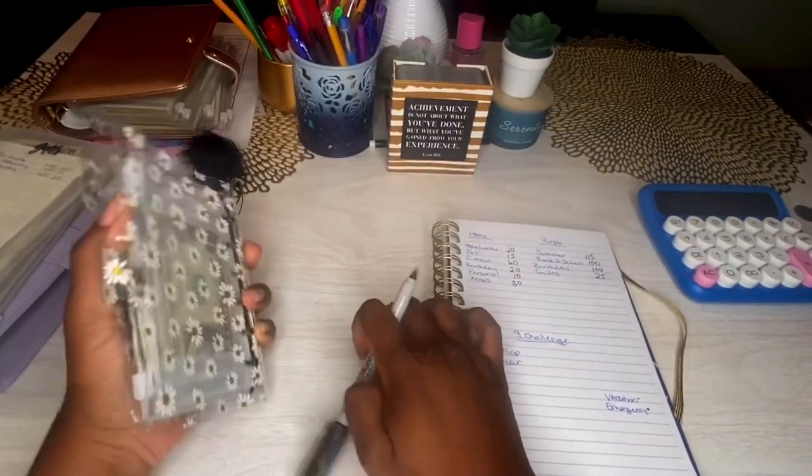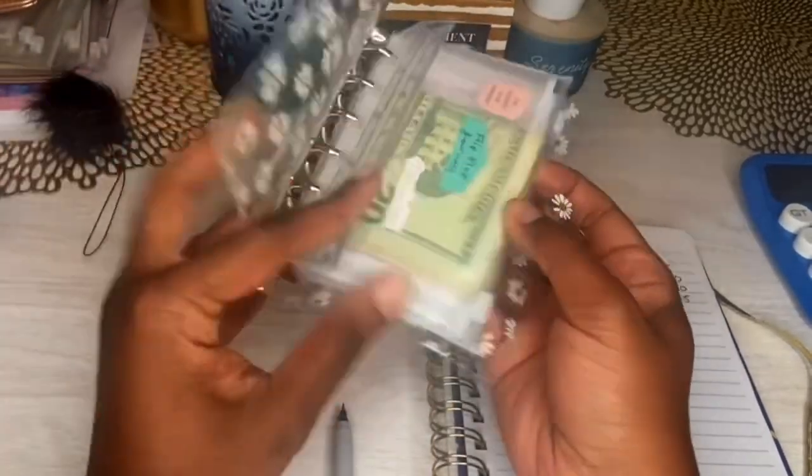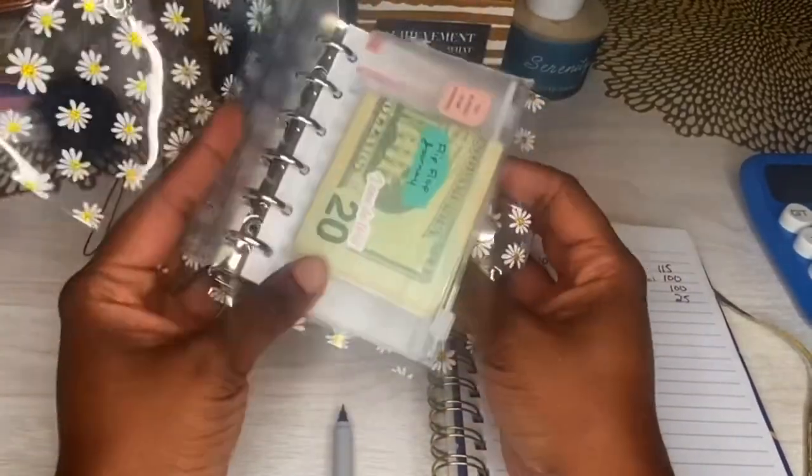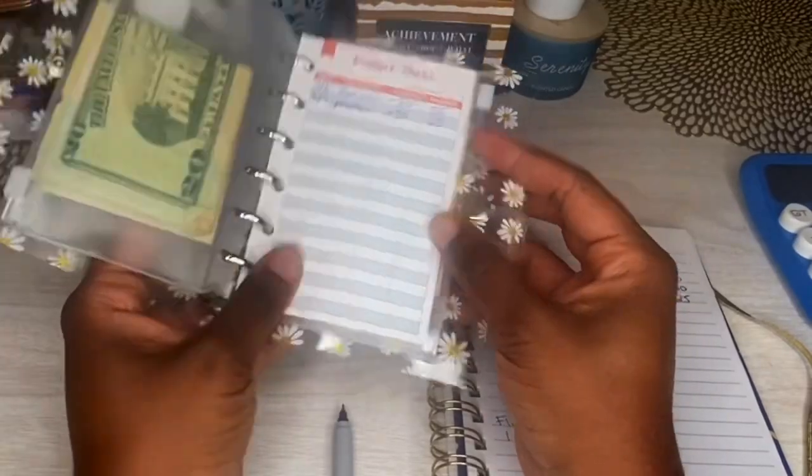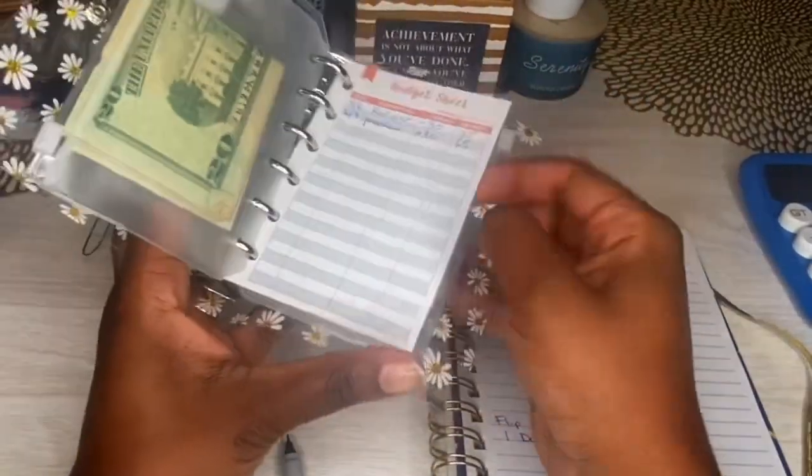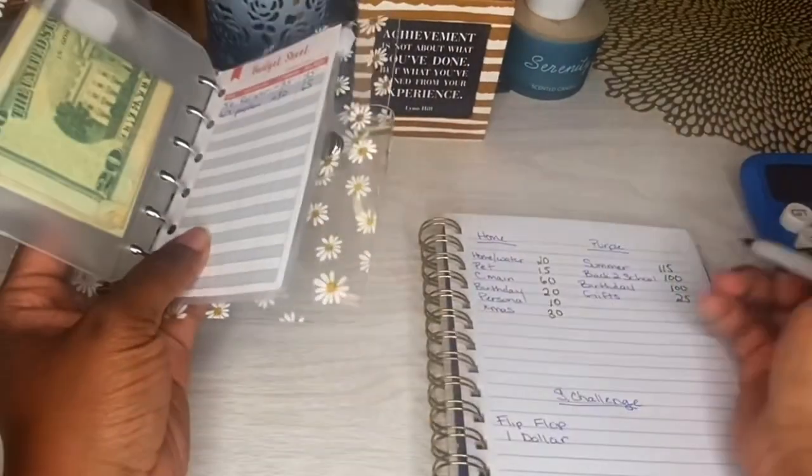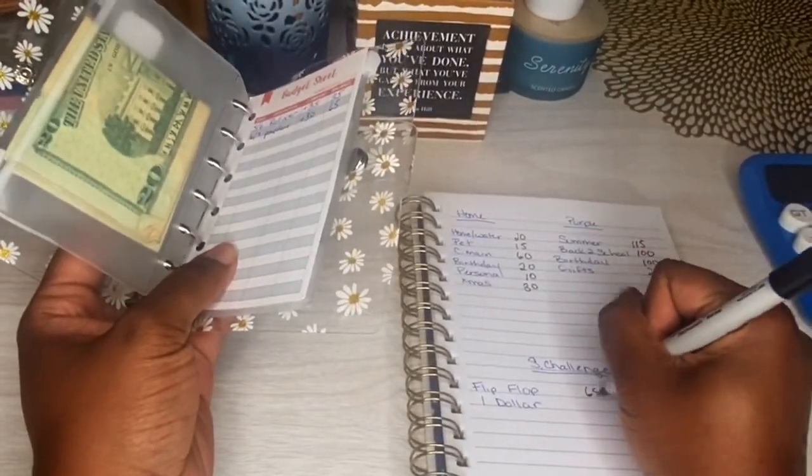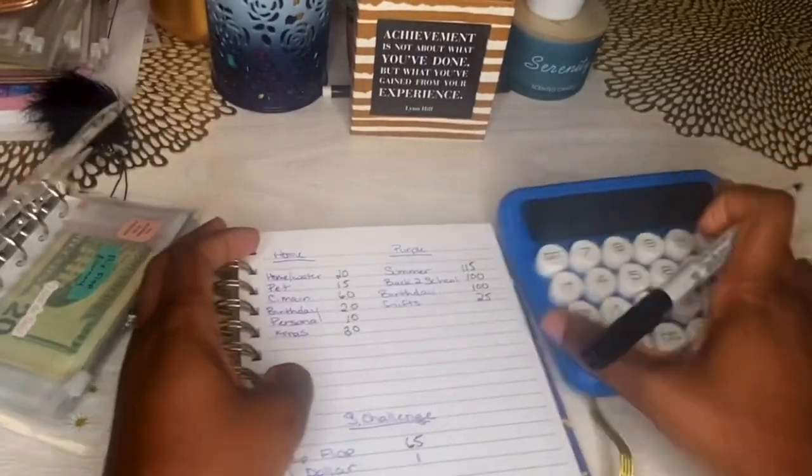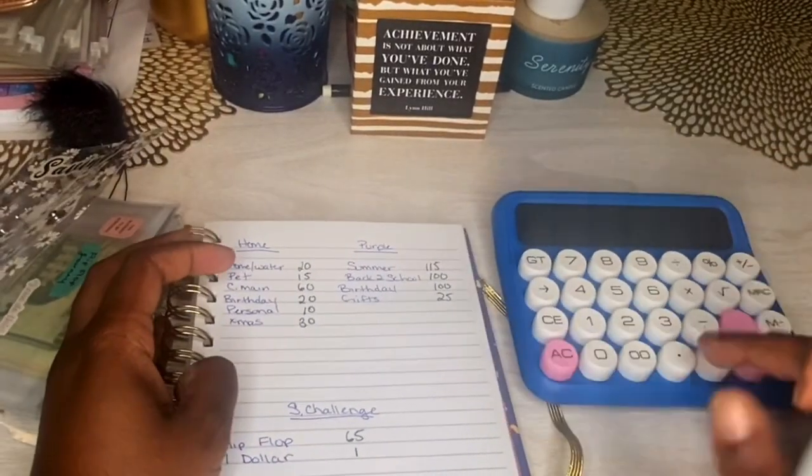This binder is just for my daughter, so this is all her priority things that I have to do for her. And lastly is my savings challenge binder, which I just started. You'll see in my little flip flop challenge there's sixty-five in there, and then in this one dollar challenge there's literally only one dollar, but we're getting there. So I want to calculate these and see first by category how much I have in each.